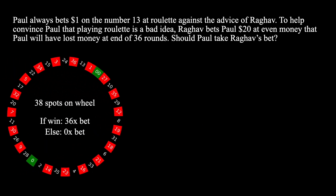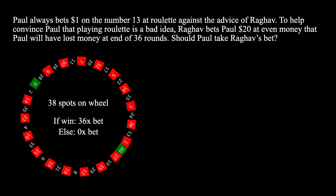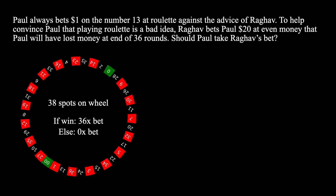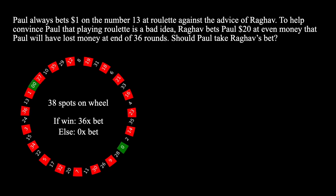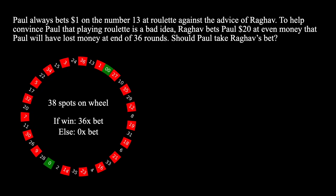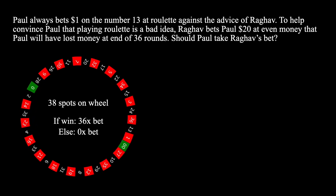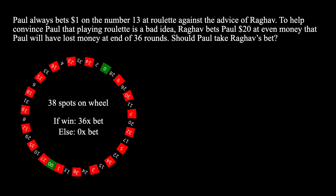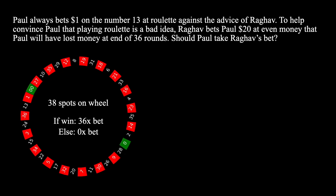Let's start by bringing out a roulette wheel so that we can better understand the setup for the problem. A standard American roulette wheel has 38 spots. If you win, you get 36 times your bet back; otherwise you get nothing if you bet on an individual number. This is because there are 36 numbers from 1 to 36, in addition to two green zero tiles.